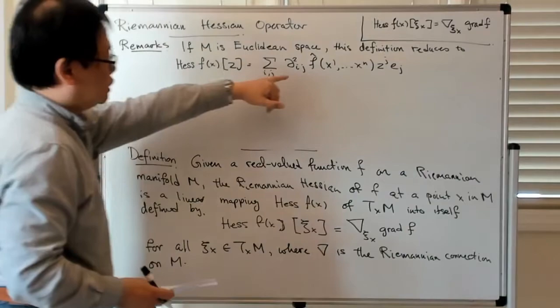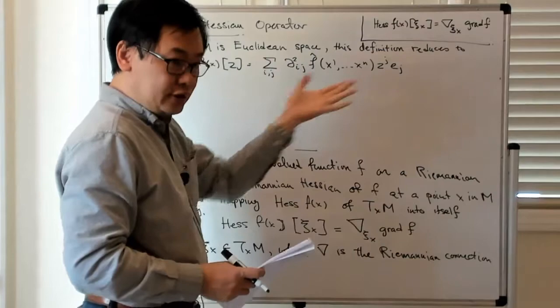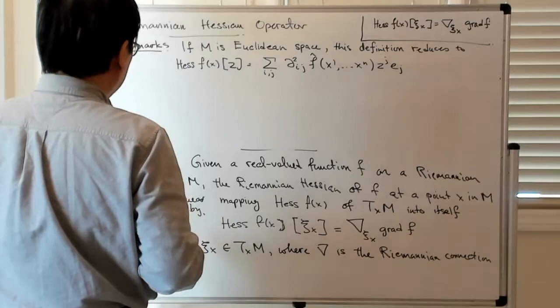So the point again is that this definition here reduces to this thing, which is again nothing more than a way of thinking of the Hessian matrix in RN as a linear operator acting on vectors and giving you another vector.